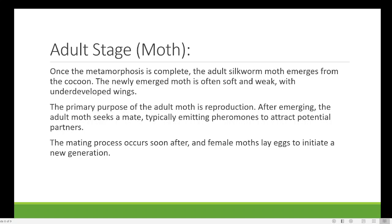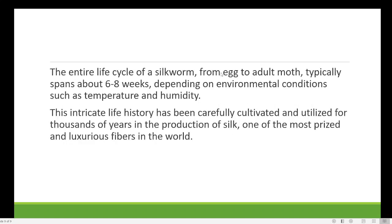After mating, the female moth lays eggs to initiate the new generation. The entire life cycle of the silkworm, from egg to adult, typically spans six to eight weeks — within about two months the life cycle is complete. This short lifespan is an advantage for the farmer, as within two months he can obtain the cocoon and enough silk for his industry. This intricate life history has been carefully cultivated and utilized for thousands of years in silk production, making the silkworm easy to domesticate and cultivate.